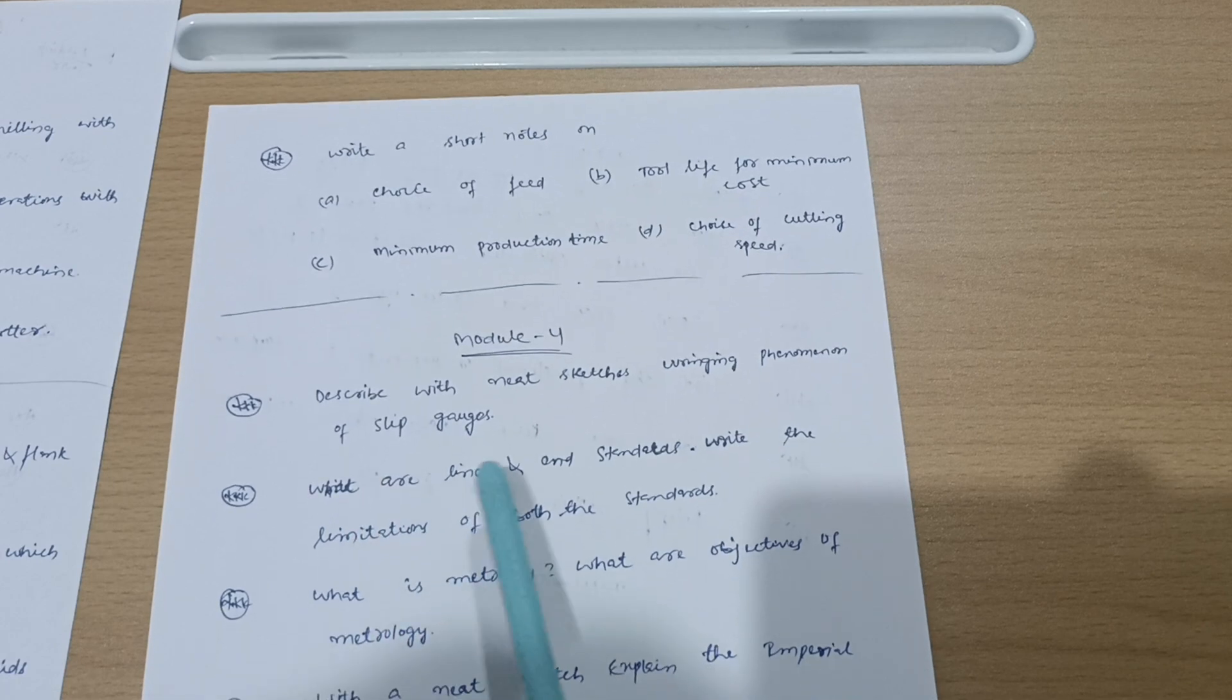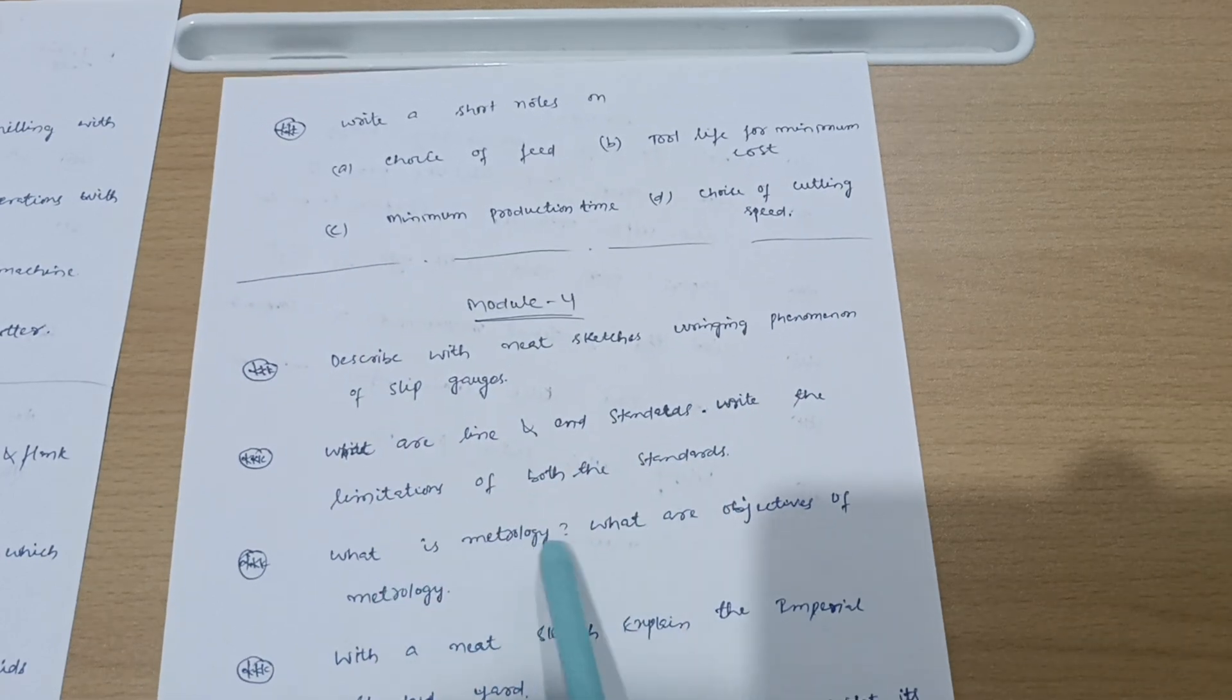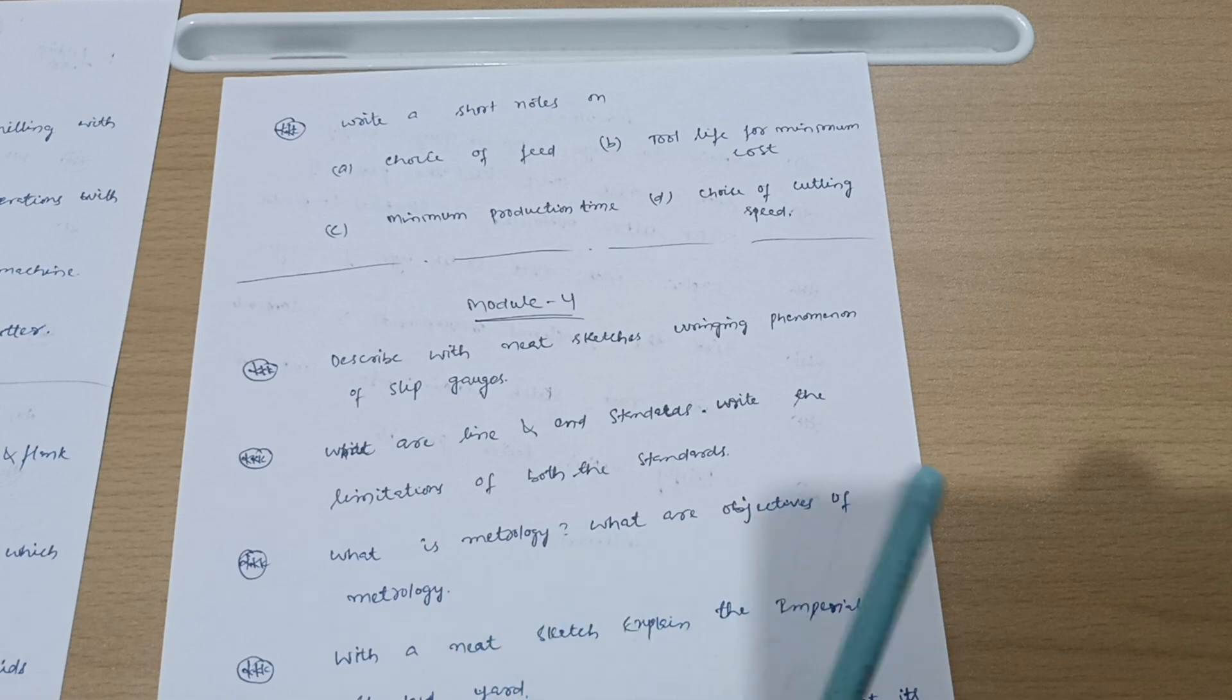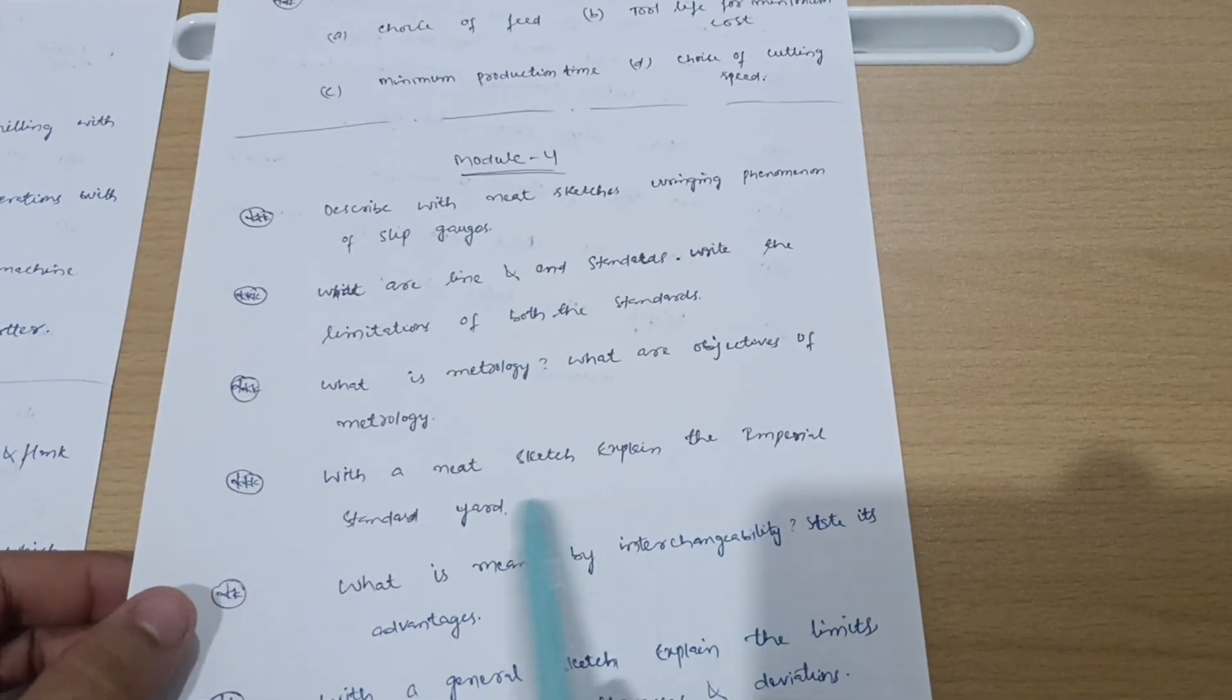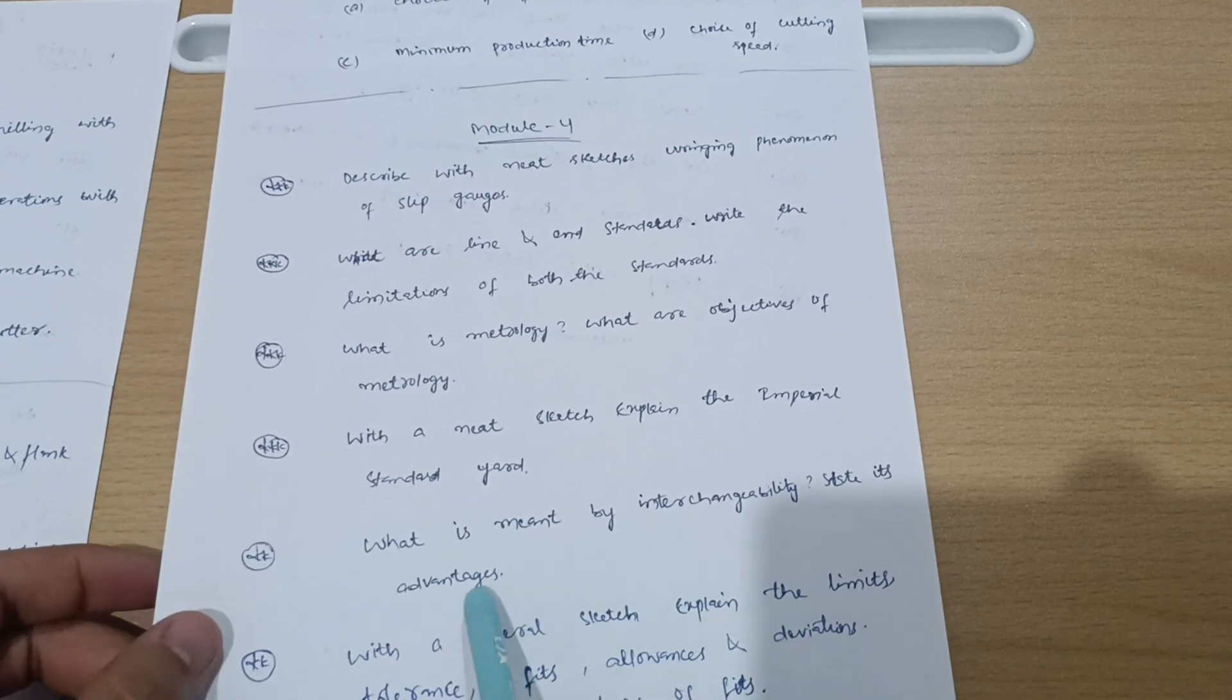Next is Module 4. Describe with neat sketches ring phenomena of slip gauges, and what are line and end standards, the limitations of both the standards. What is metrology? What are objectives of metrology? With neat sketch explain the Imperial Standard Yard.